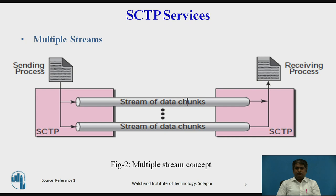The idea is similar to the multiple lanes of a highway. Each lane can be used for different types of traffic — for example, one lane can be used for regular traffic and another for carpools. If the traffic is blocked for regular vehicles, carpool vehicles can still reach their destination. The figure shows the idea of multiple stream delivery.